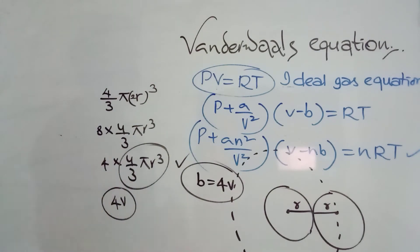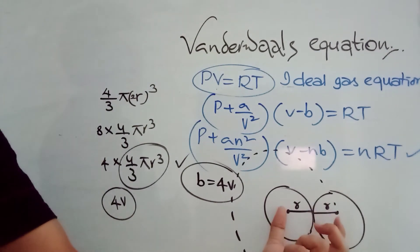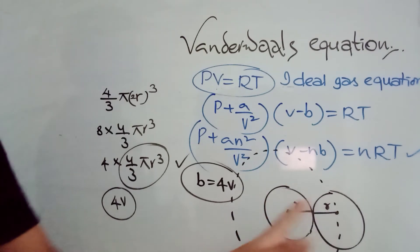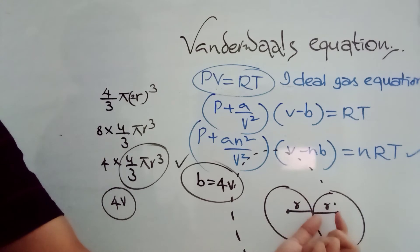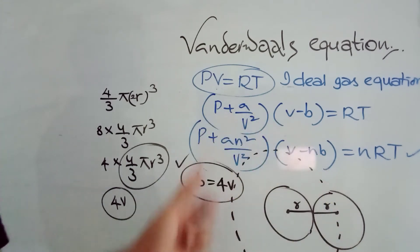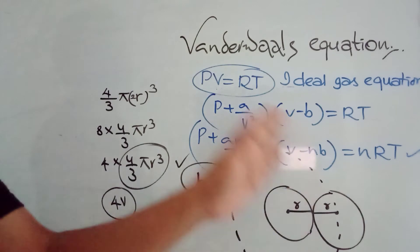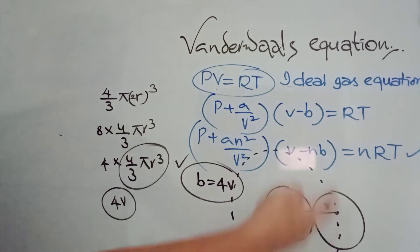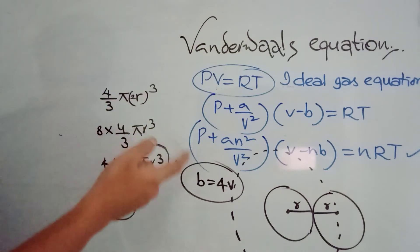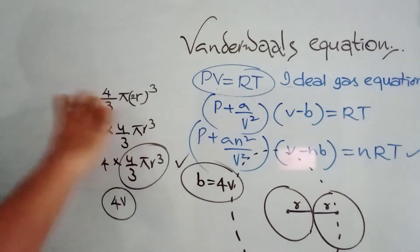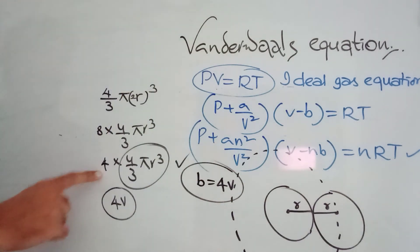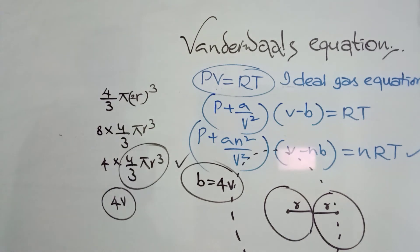To recap: when two molecules are side by side, they cannot come any closer. With radius R for each, a combined sphere of radius 2R defines the restricted area where both molecules cannot move. The volume of this sphere is (4/3)π(2R)³ = 8 × (4/3)πR³. For one molecule, that is 4 × (4/3)πR³ = 4V. So for each molecule, the restricted volume is 4V.